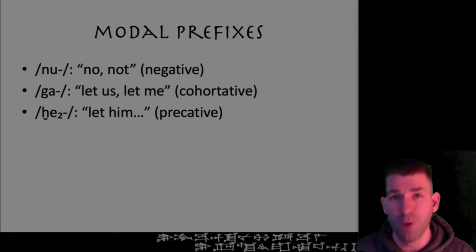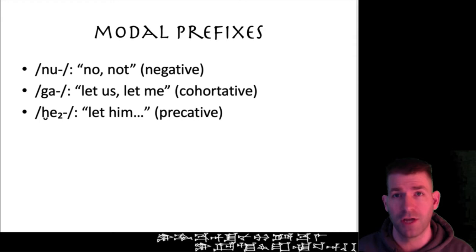The final type of prefix that you need to learn to translate a Sumerian verbal chain is the modal prefix. As with the conjugation prefixes, there are several that we will not discuss in this chapter. However, these are the most important for the beginner to understand.